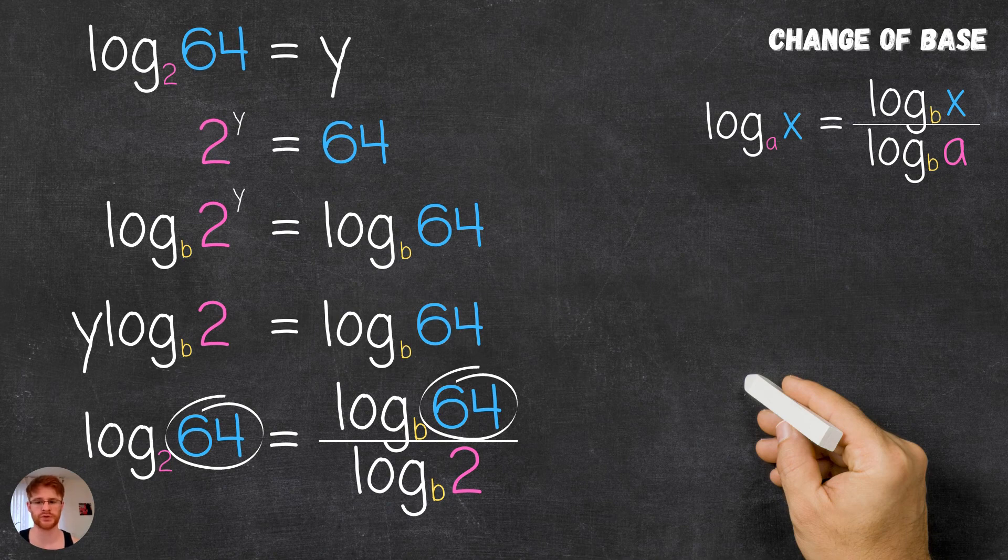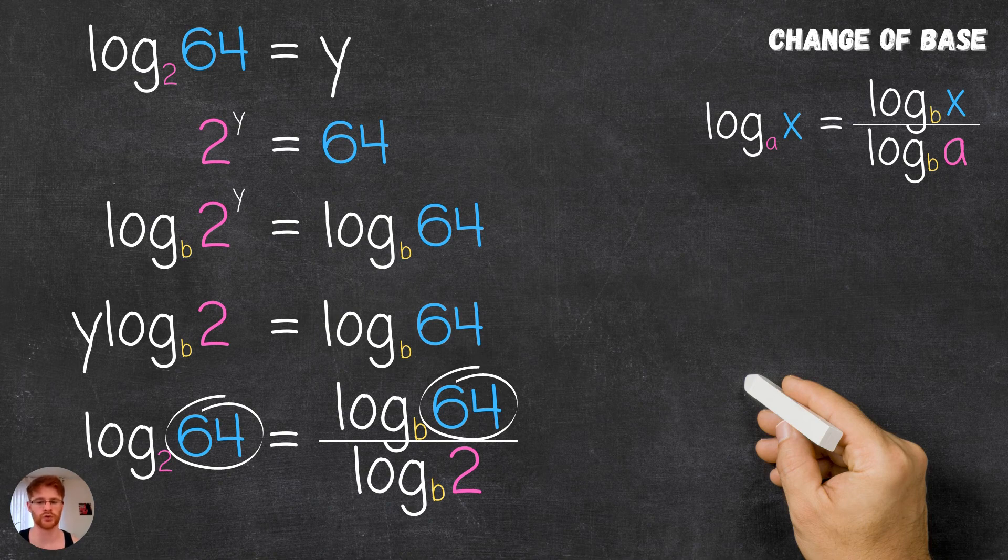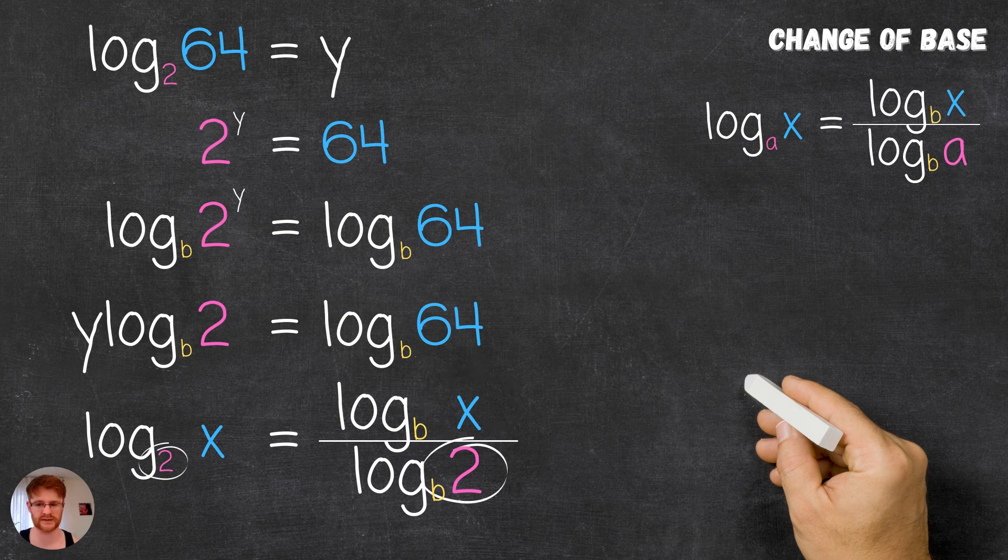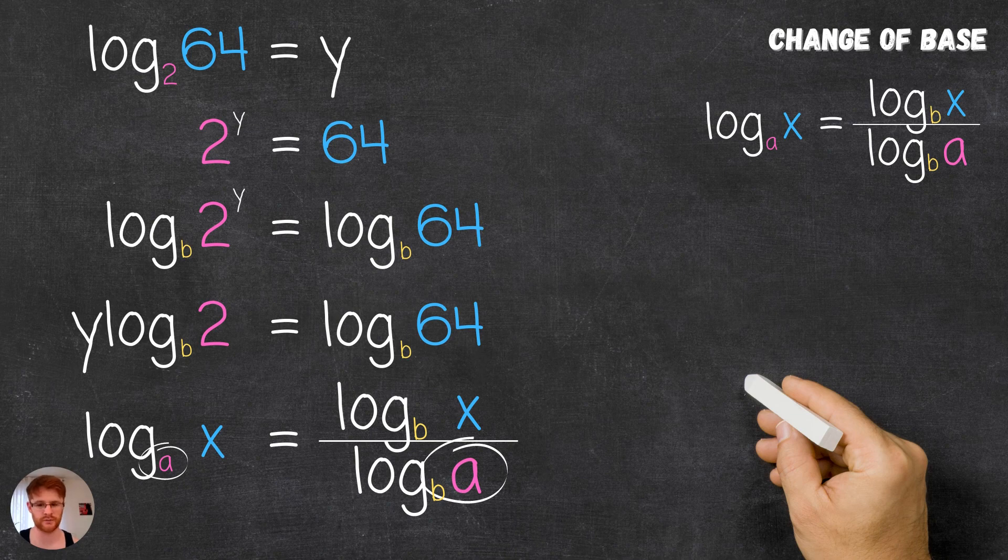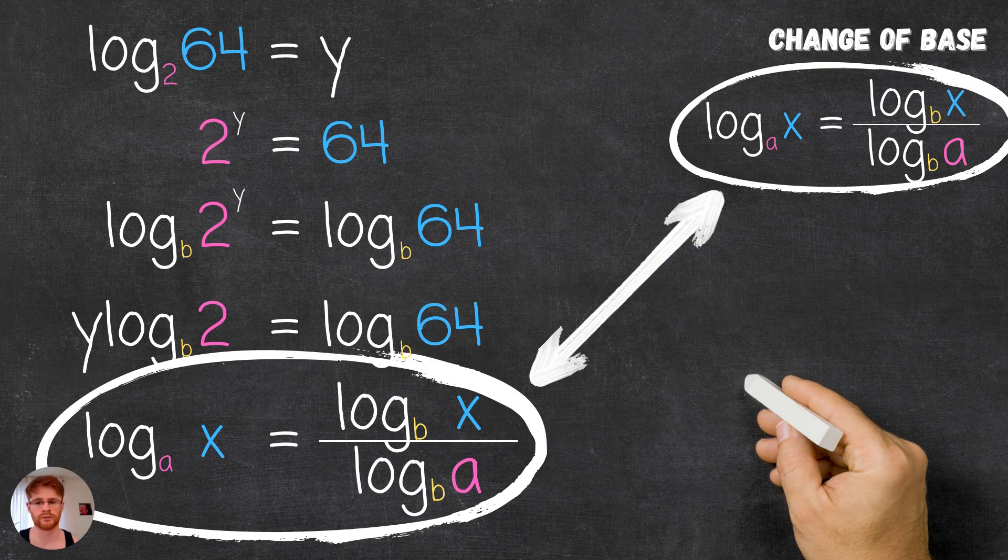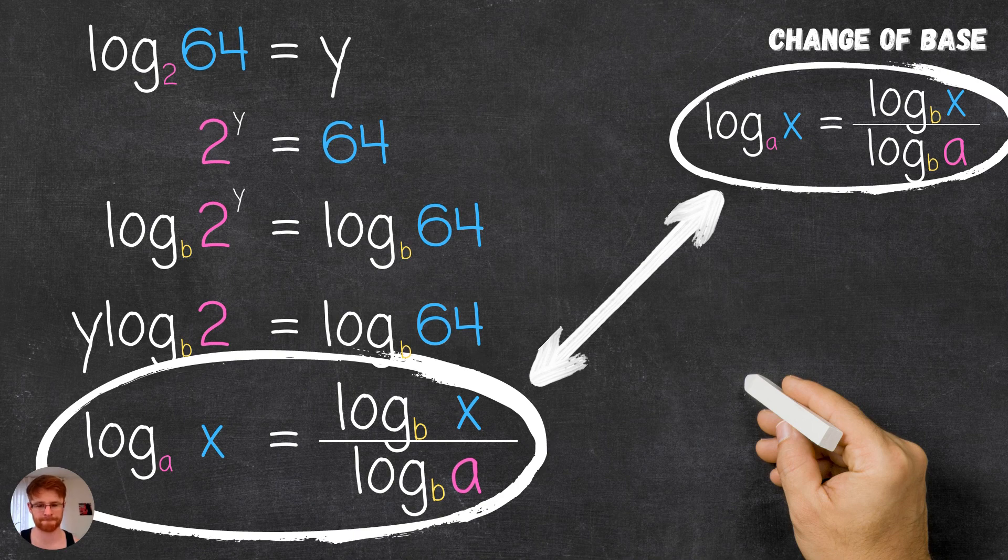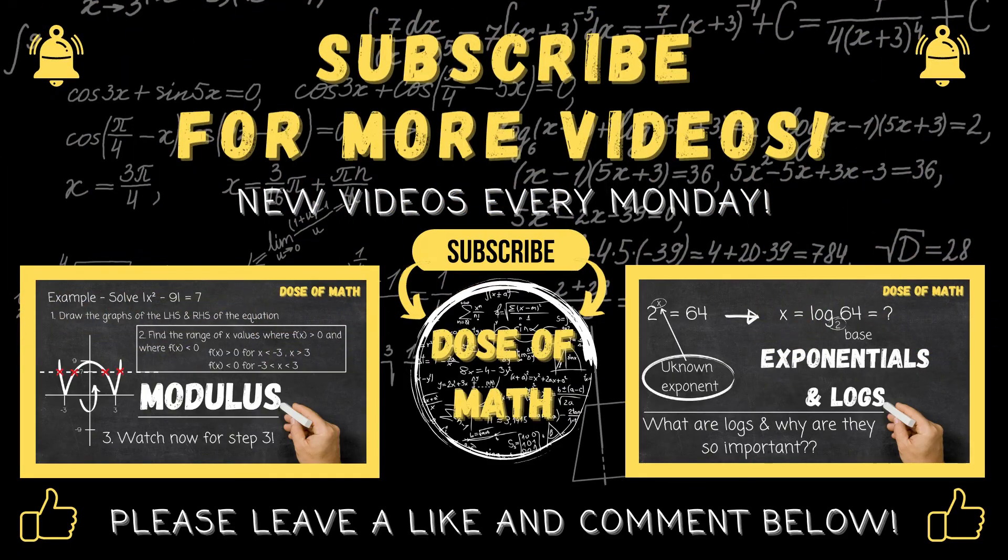We used this example just because examples can be easier to get your head around, but this relation holds true for any exponential x and also any base a from which we'd like to change base. This leaves us with the change of base relation that we started with in the beginning.